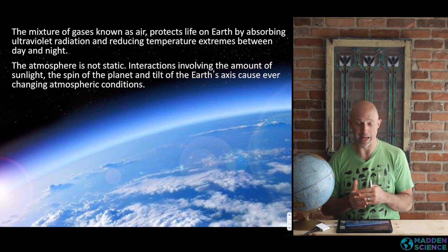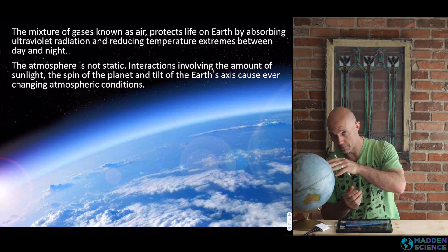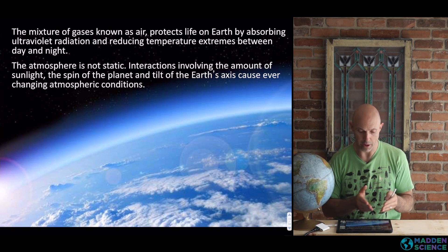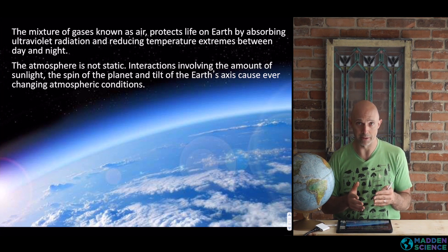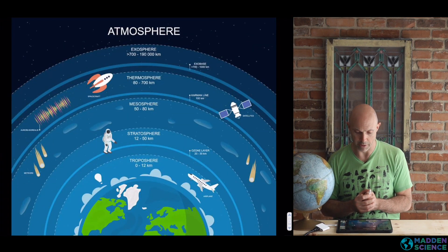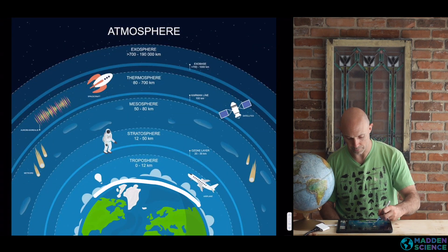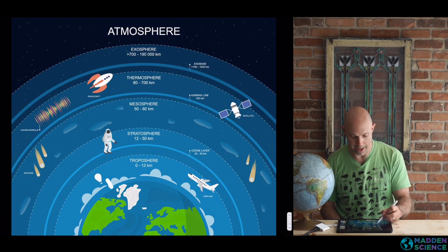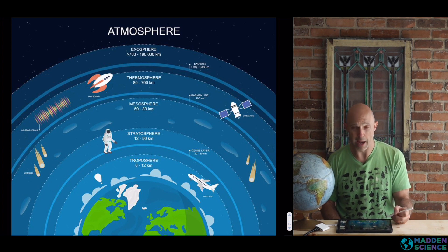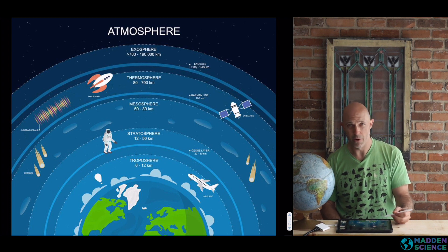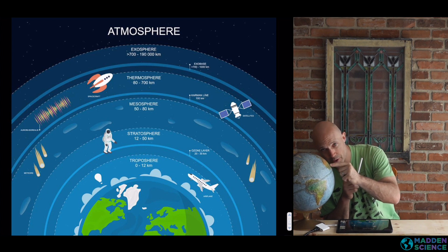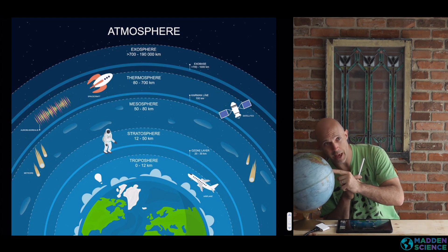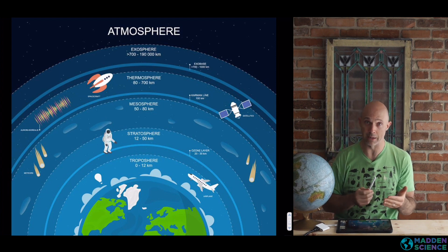Keep in mind that atmosphere is not static. Interactions involving the amount of sunlight, the spin of the planet, and tilt are going to cause ever-changing atmospheric conditions. They're going to play out in nearly every aspect of environmental science. Here's your general picture. It shows from Earth and its crust all the way out to outer space. That layer of atmosphere, layer of air is really tiny in comparison to the Earth itself. Just a thin envelope, a thin outer skin on the Earth.